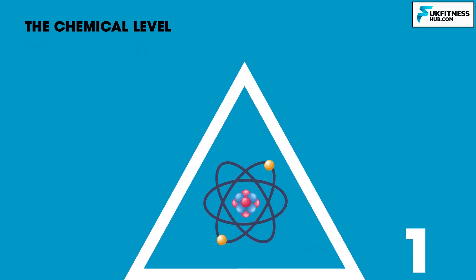Level 1: the chemical level. The chemical level is the simplest level and starts with atoms, which make up every material thing in the universe including our bodies. When atoms bond together they create molecules, which are larger chemical groupings. When molecules bond together they create macromolecules.